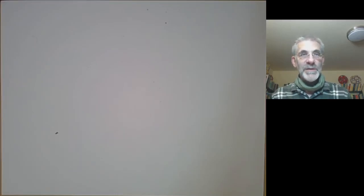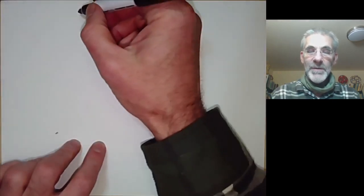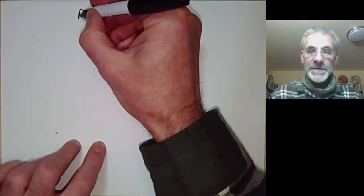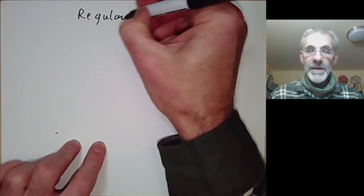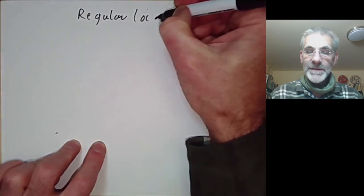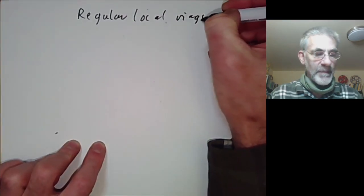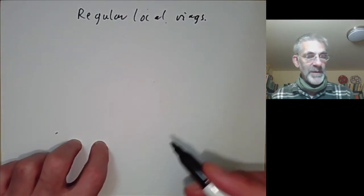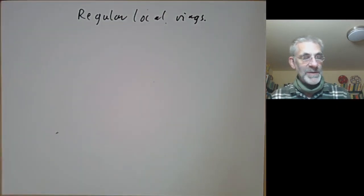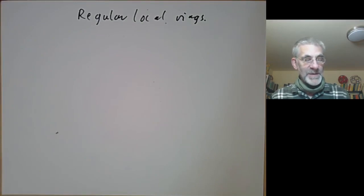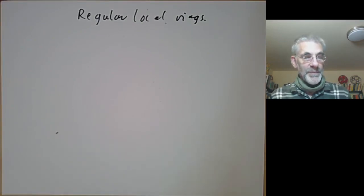This lecture is part of an online commutative algebra course and will be about examples of regular local rings. In the previous lecture we looked at some examples of regular local rings, especially over algebraically closed fields.